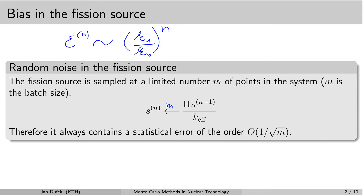The fission operator H gives us the expected distribution of the next generation fission source. We use this distribution to generate random variables — the fission neutrons — selecting only M neutrons, so the fission source is a random variable. Since it is sampled by a limited number of sites, it contains a statistical error of the order 1/√M, where M is the number of neutrons sampled in the fission source.